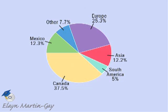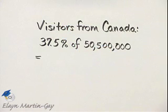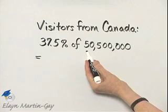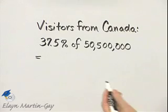So now let's use this circle graph and find how many people visited the U.S. in 2008 from Canada. Look for the sector marked Canada and notice that percent is 37.5%, so we need to find 37.5% of 50,500,000. How do we do that?